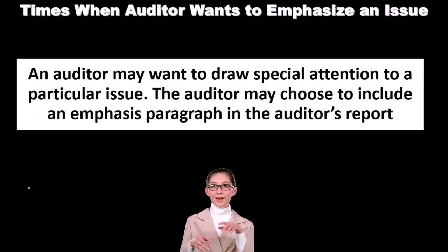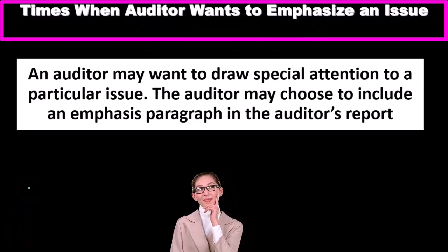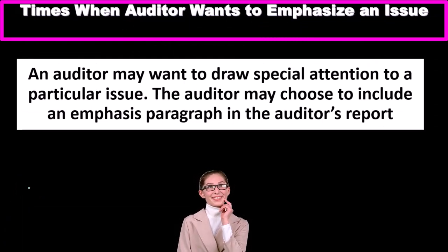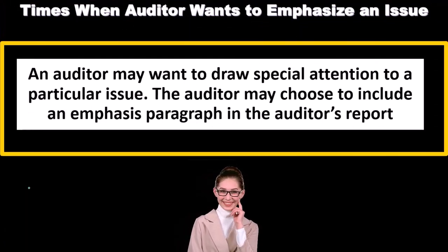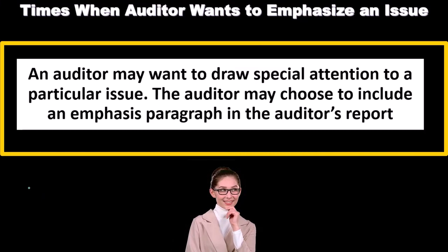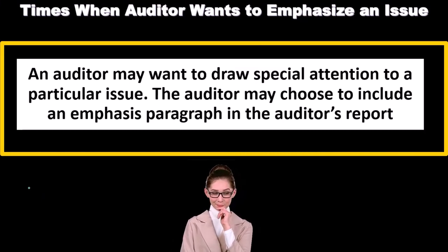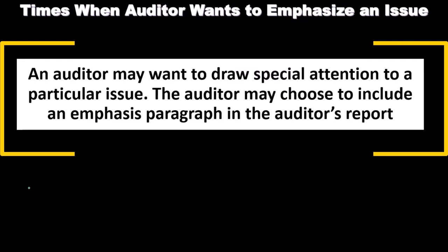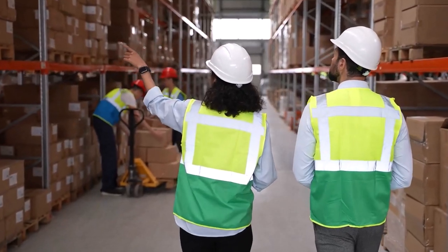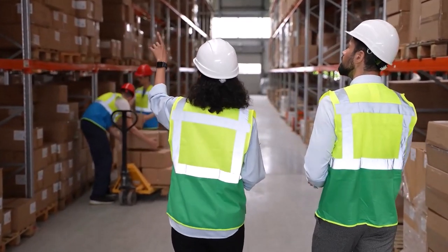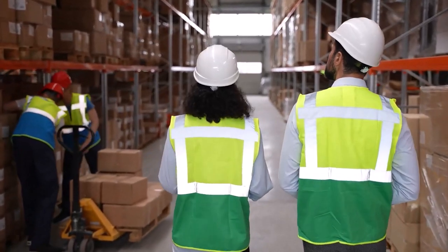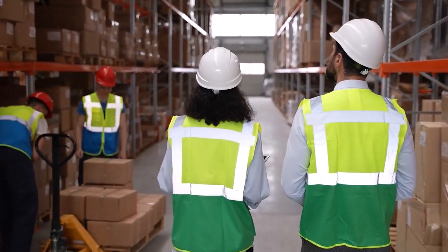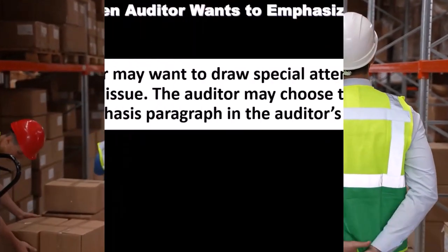Sometimes the auditor will want to emphasize an issue — the auditor may want to draw special attention to a particular matter. The auditor may choose to include an emphasis paragraph in the auditor's report. If there's some kind of issue that the auditor thinks is important, that might be another item the auditor will use to adjust the standard unqualified report.